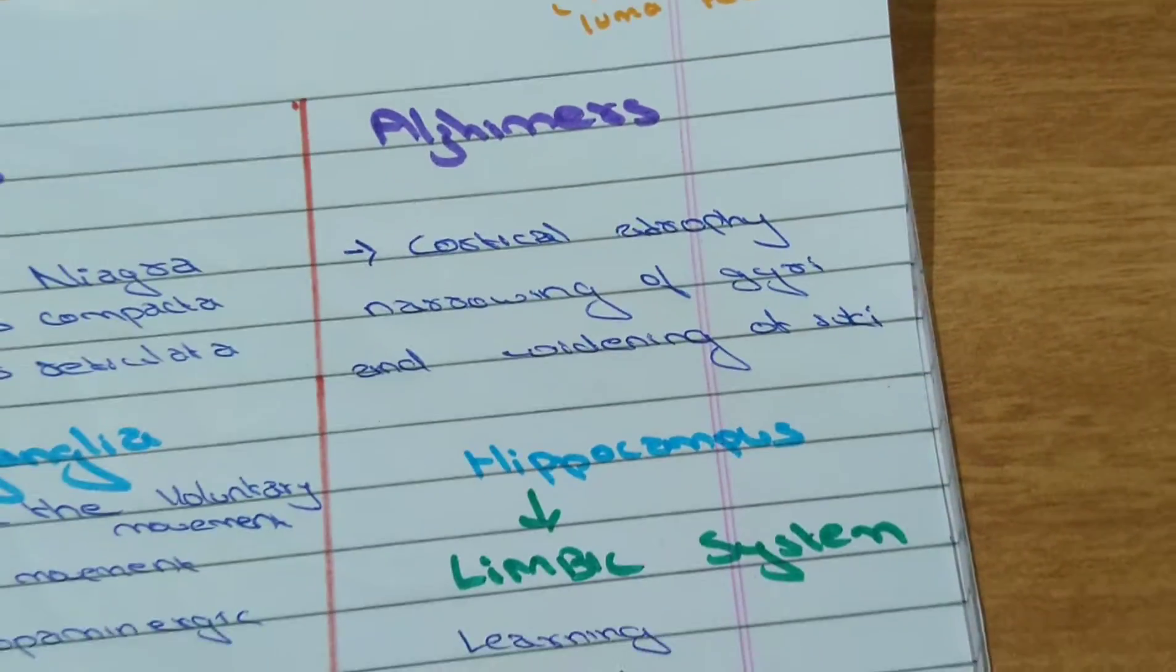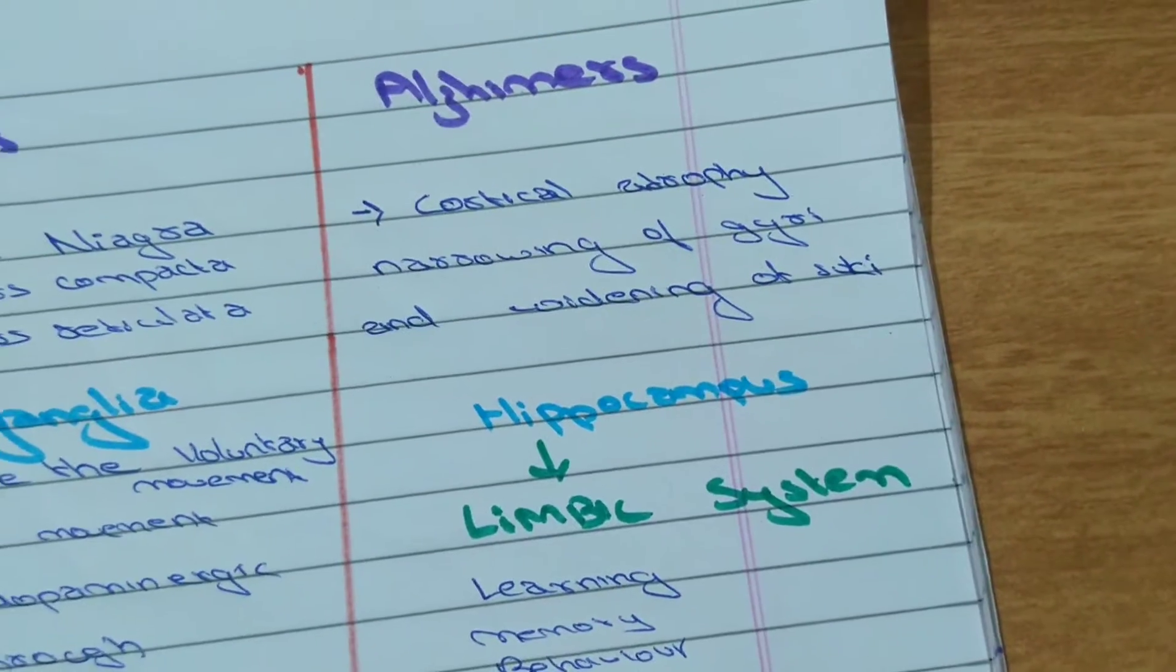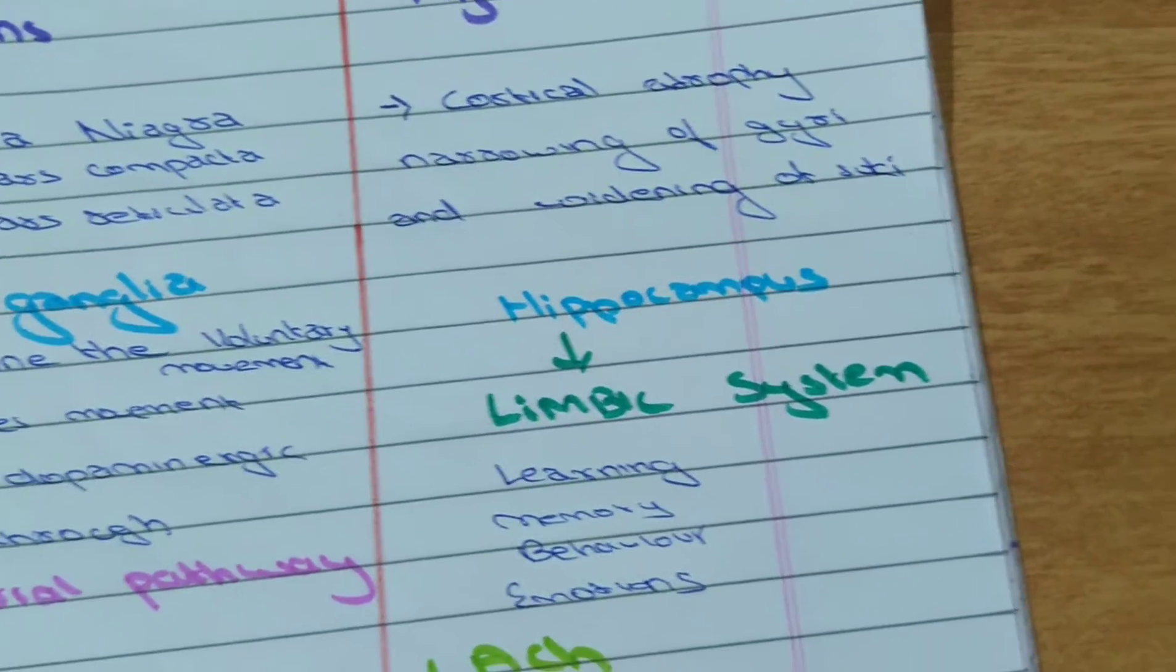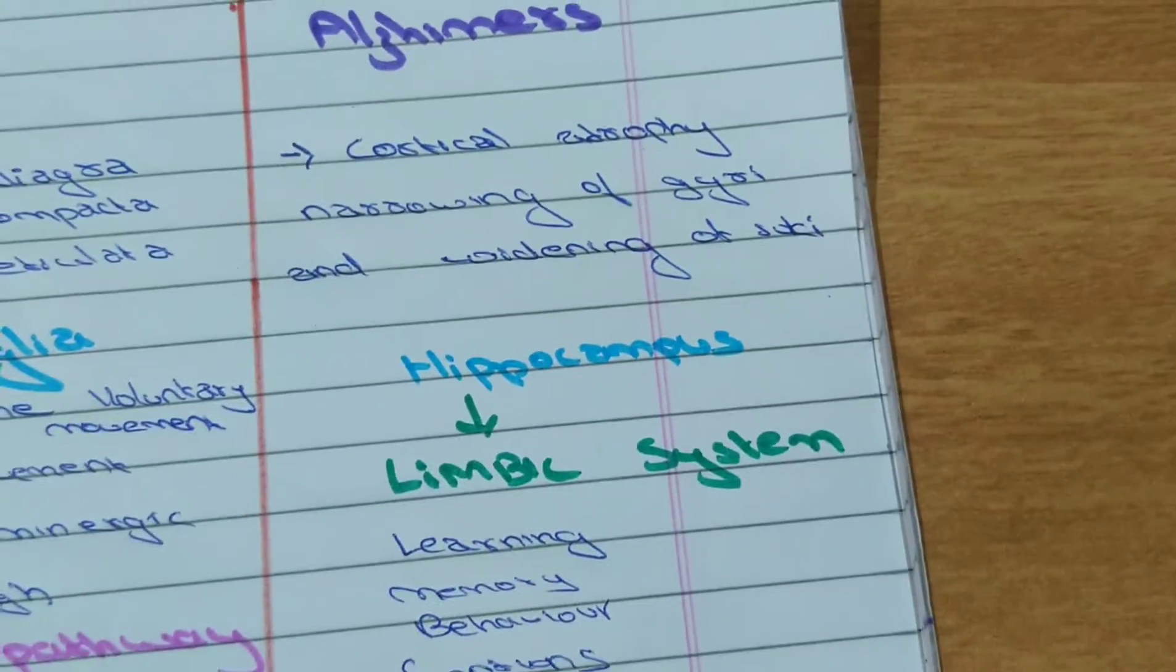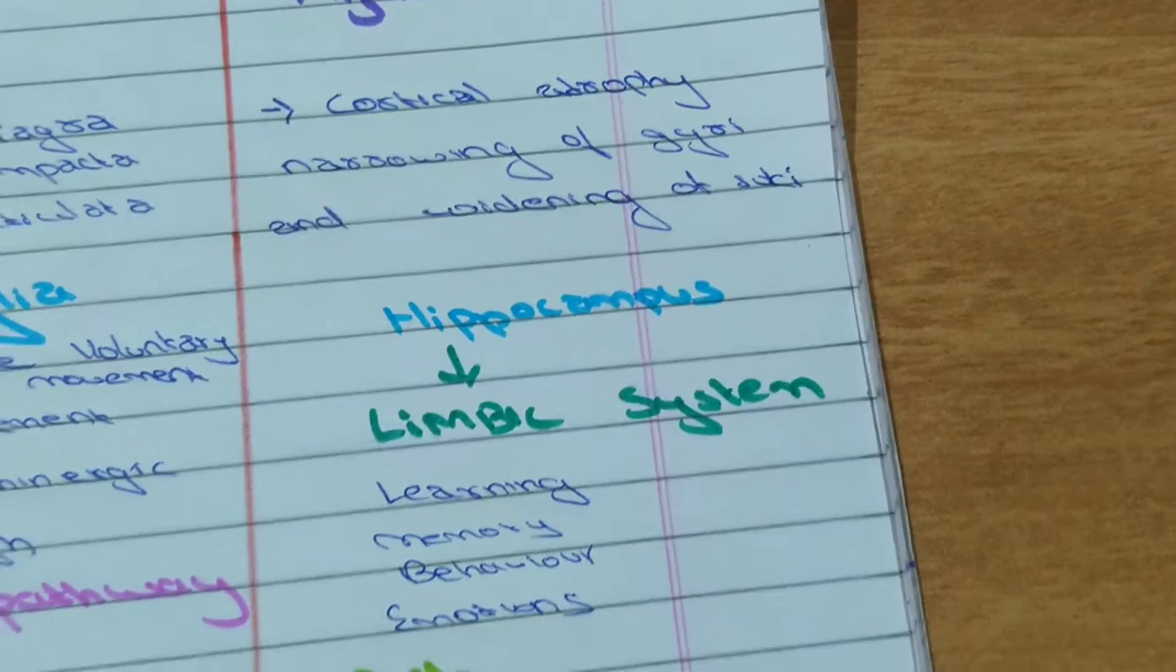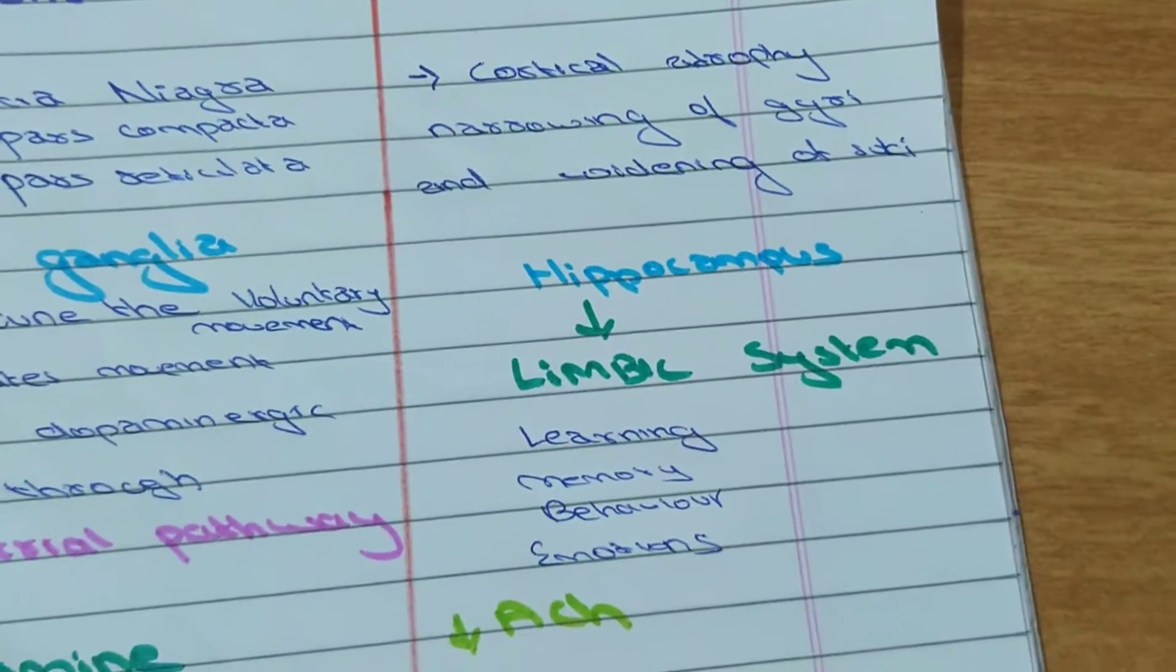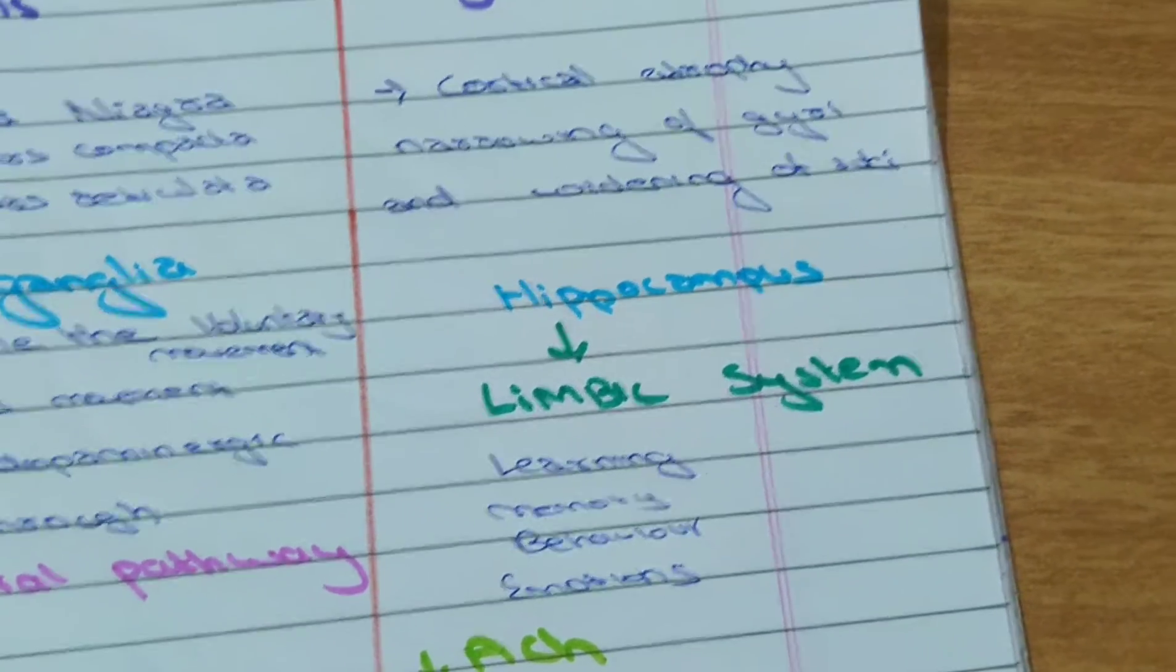In Alzheimer's disease there is cortical atrophy - the size of cortex is reduced. The main part of the cortex which is affected is hippocampus. Hippocampus is part of the limbic system. Limbic system is used for learning, memory, behavior and emotions. Hippocampus is mainly for memory.